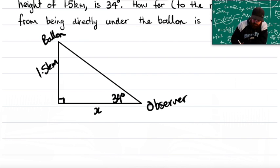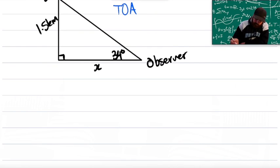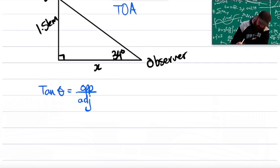Alright, so looking at that again, labeling our sides, 1.5 is my opposite, x is my adjacent, opposite and adjacent. We're going to be using tan again, TOA. So tan of theta is equal to the opposite side over the adjacent side.